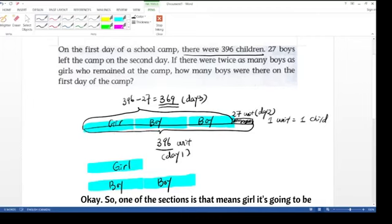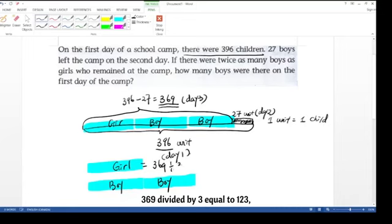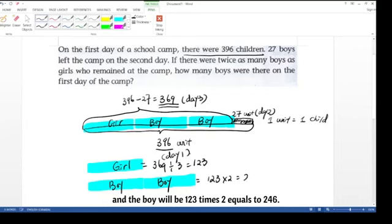So now it's very clear to me that the 369 students are divided into three equal sections. Okay. So one of the sections is, that means girl is going to be 369 divided by 3 equal to 123. And the boy will be 123 times 2 equal to 246.